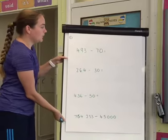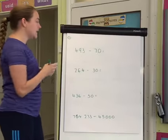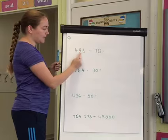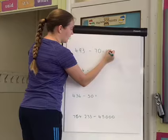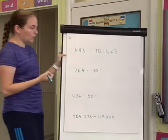I'm just going to go through a couple of quick examples. So to start with, we've got 493 take away 70. Now this one's really easy because we just need to think which digit is going to change. So it's going to be my tens digit that changes. I'm not going to be bridging the tens. So I can do 90 take away 70 is 20. So my answer will be 423.